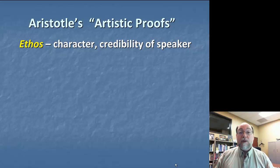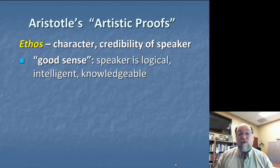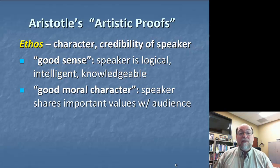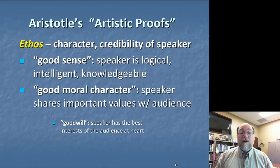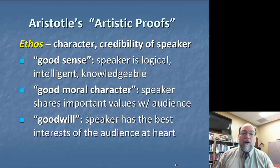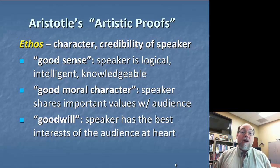Ethos, according to Aristotle, is comprised of three primary components. Good sense: I am persuaded because I trust you, and I trust you because you're logical, you're intelligent, you're knowledgeable, you have experience or relevant authority, you know what you're talking about. The second element of ethos is good moral character: I'm persuaded by you because I trust you, and I trust you because you share important values with me — constructing values of right and wrong, good and bad. Values are good moral values if the audience agrees that they're good moral values. The final piece of ethos is goodwill: I'm persuaded by you because I trust you, and I trust you because you have the best interests of the audience at heart.